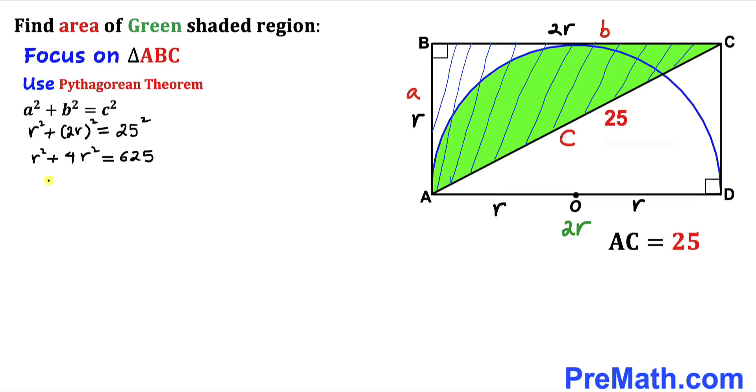R² + 4R², we are going to combine like terms. 5R² = 625. And now let's divide both sides by 5. So therefore our R² value turns out to be 125.